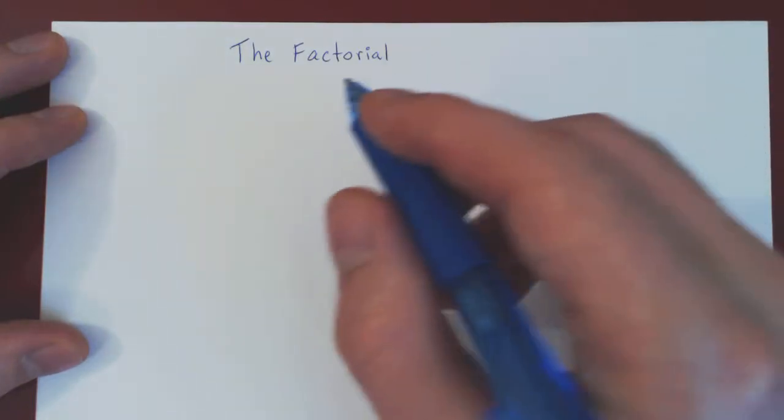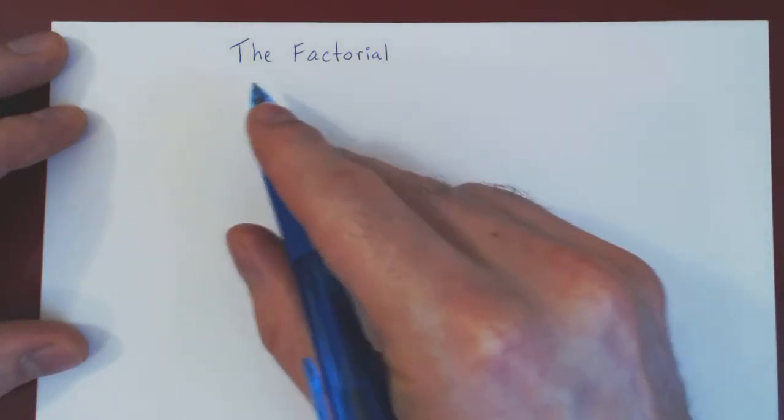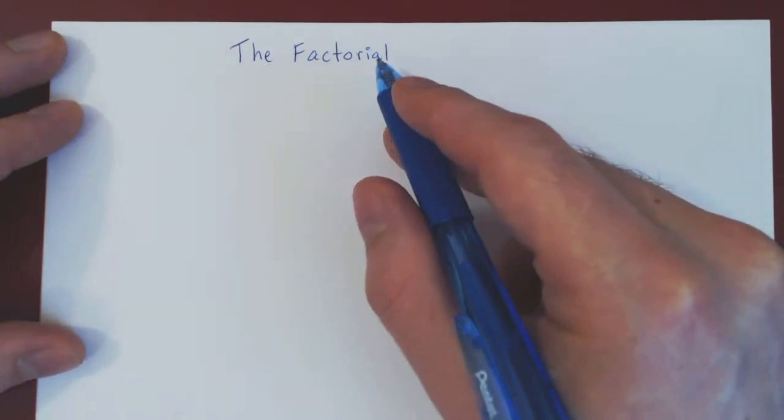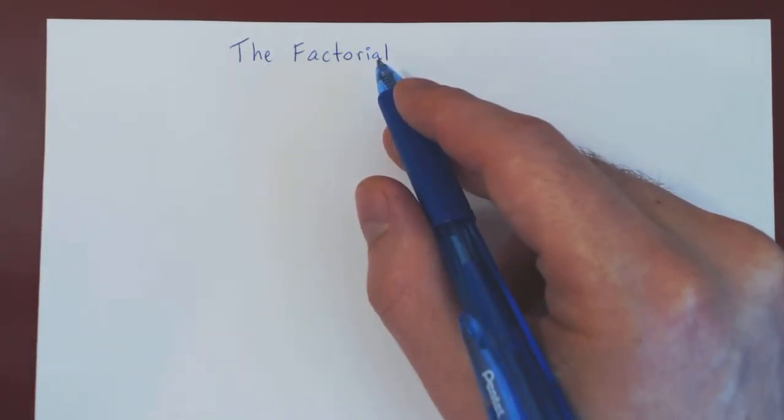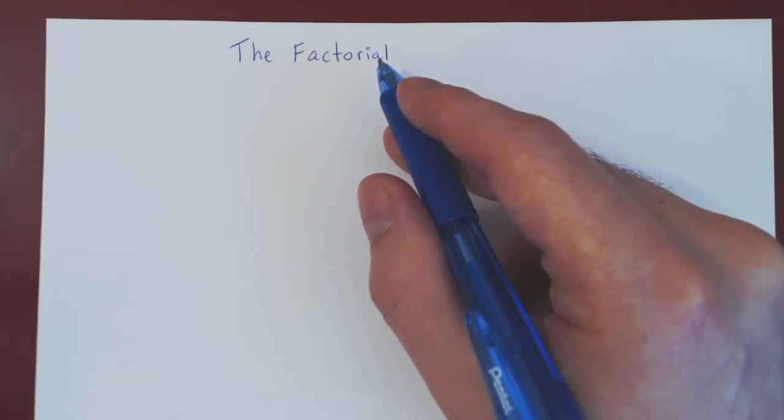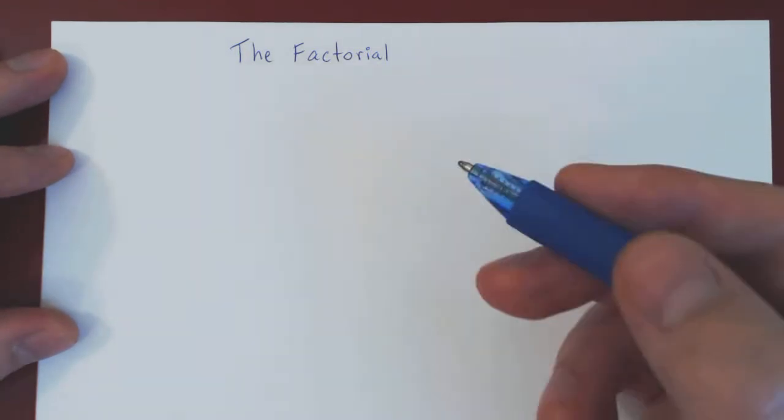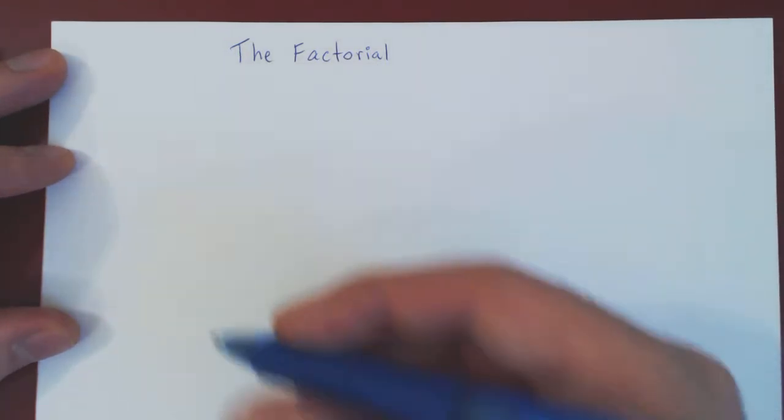Okay, so in this video we want to introduce quickly the factorial. The factorial is simply a function defined on the natural numbers, and we denote the factorial with an exclamation mark. So here's how it's defined, and you'll see it's a recursive definition.